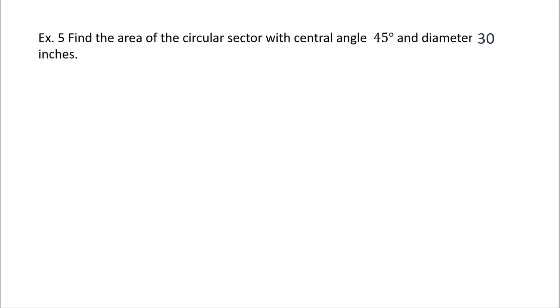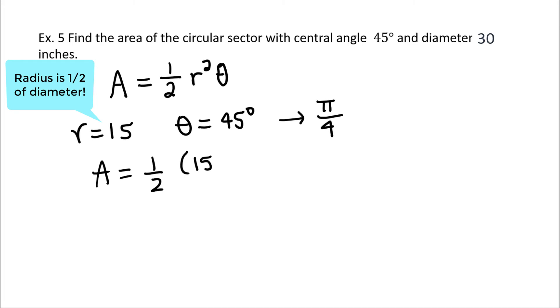Find the area of the circular sector with central angle 45 degrees and diameter 30 inches. To find the area of a circular sector, we'll use the circular sector area formula, which is A equals one-half radius squared θ. The parts are, the radius is 15, θ is given as 45 degrees, but in this formula it has to be in radians. So 45 degrees is equivalent to π/4 radians. Let's complete the formula. Area is one-half, the radius is 15 squared times π/4. We'll leave this answer in exact form. So 15 squared is 225 times π, and then 2 times 4 in the denominator would be 8. The area of the sector is 225π divided by 8 inches squared.